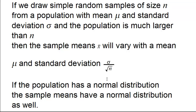The sample means will have more consistency around the mean as compared to the individuals, and this holds if the population is much larger than the sample size, which will be the case in most of our examples.